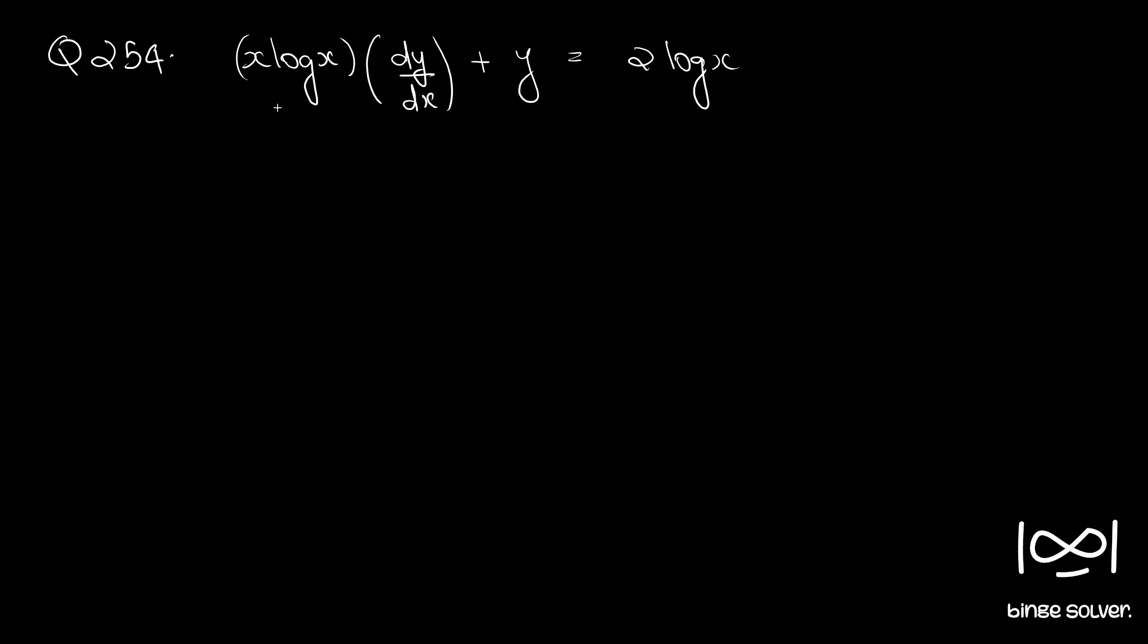If you divide throughout with x log x, we have dy by dx plus y into 1 by x log x equal to 2 by x.